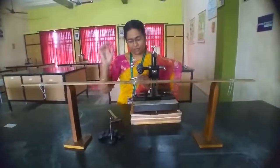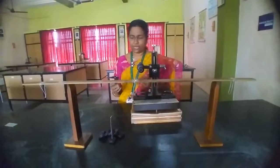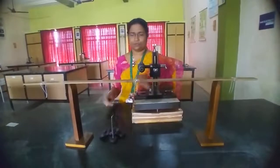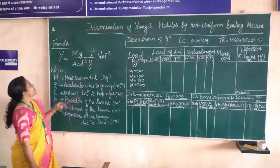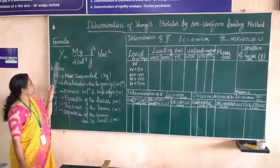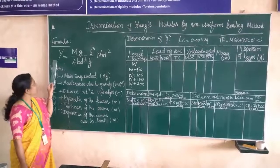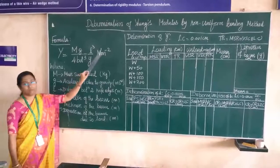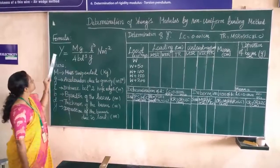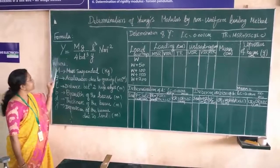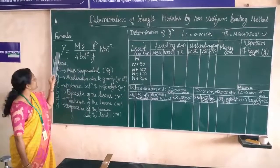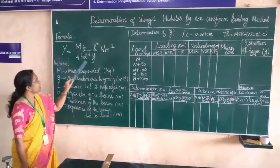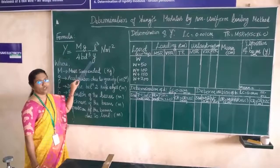The wooden beam's thickness and breadth can be measured with the help of vernier caliper and screw gauge. The formula to calculate Young's modulus is: Y = MGL³ / 4BD³y  Newton per meter squared. In this formula, capital Y is Young's modulus, and small y is the depression due to the load added.